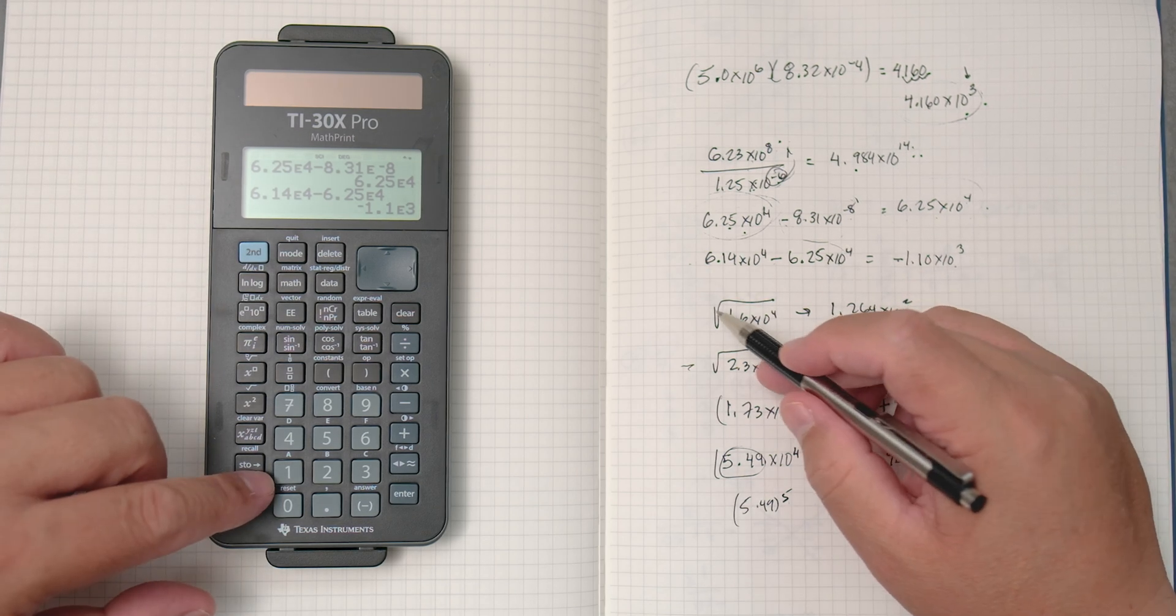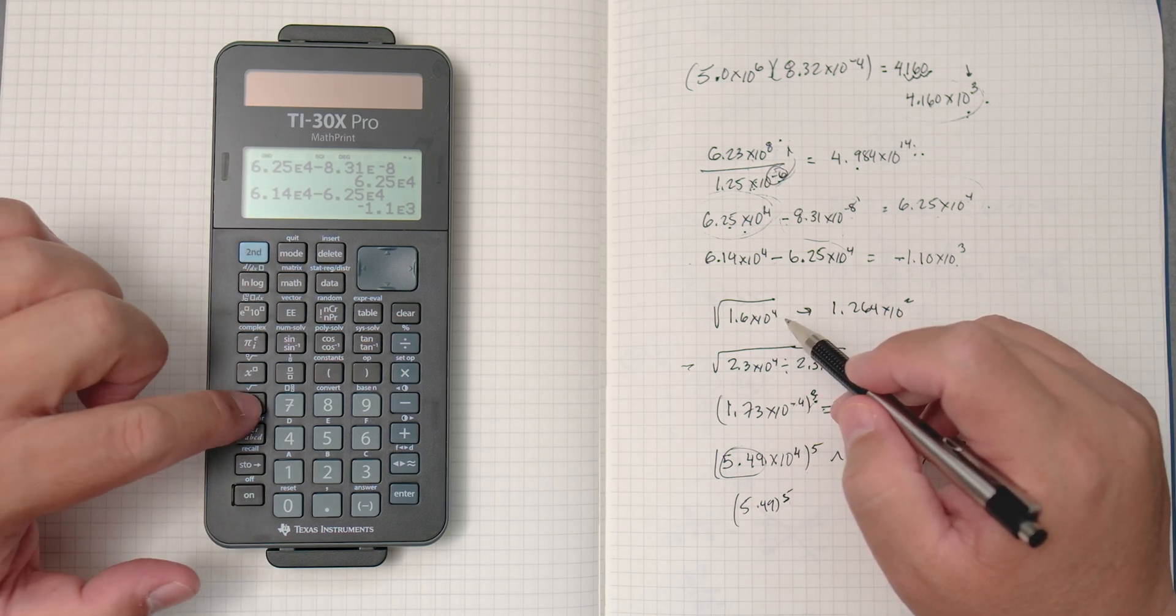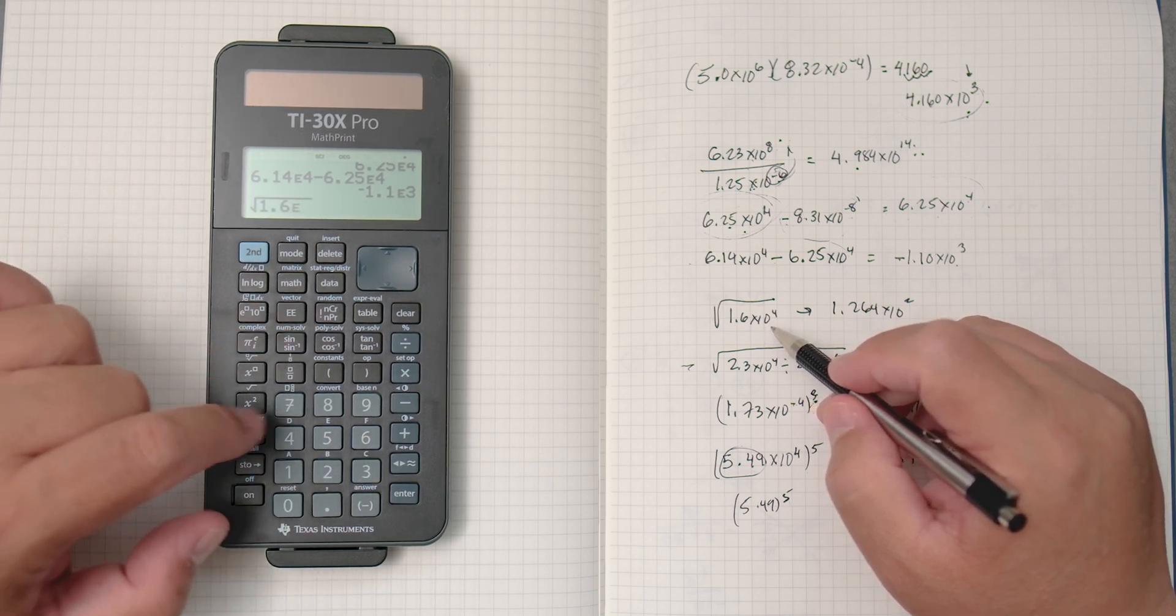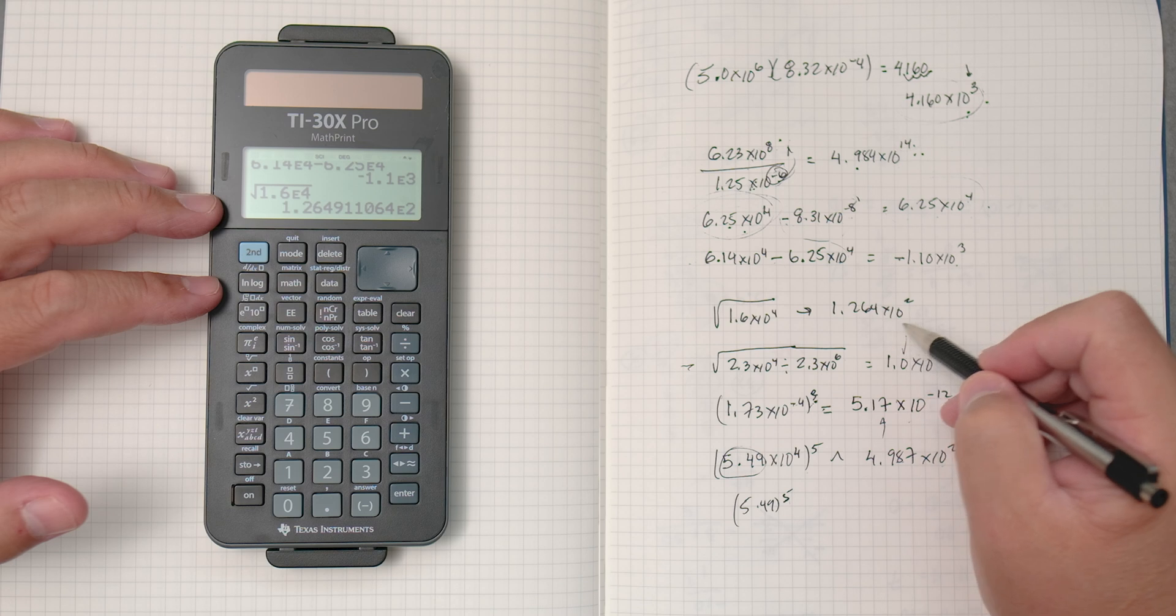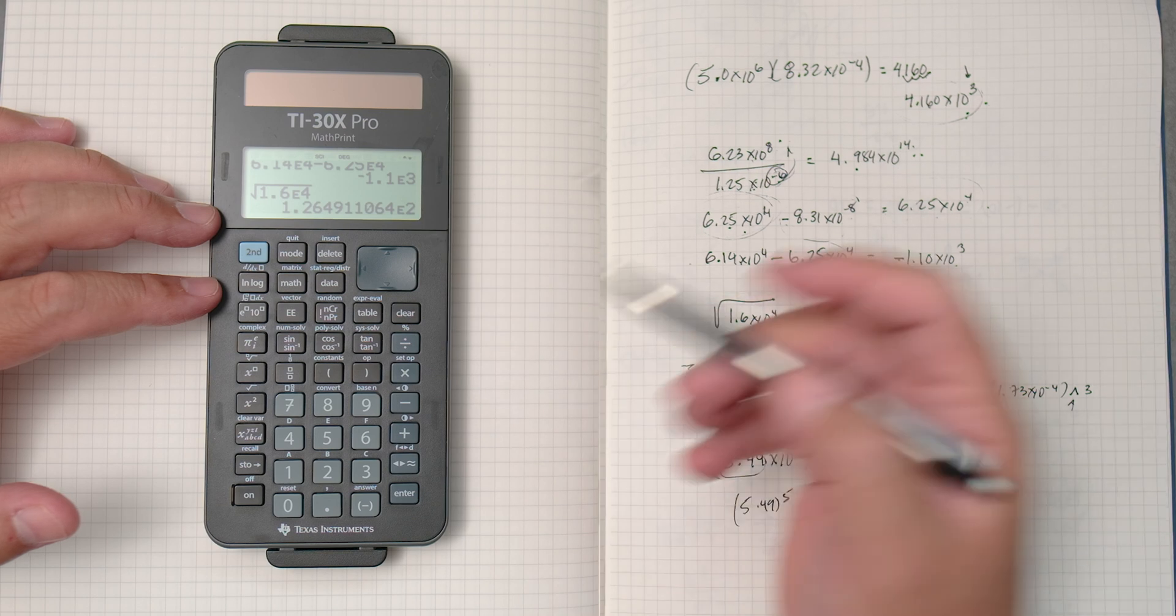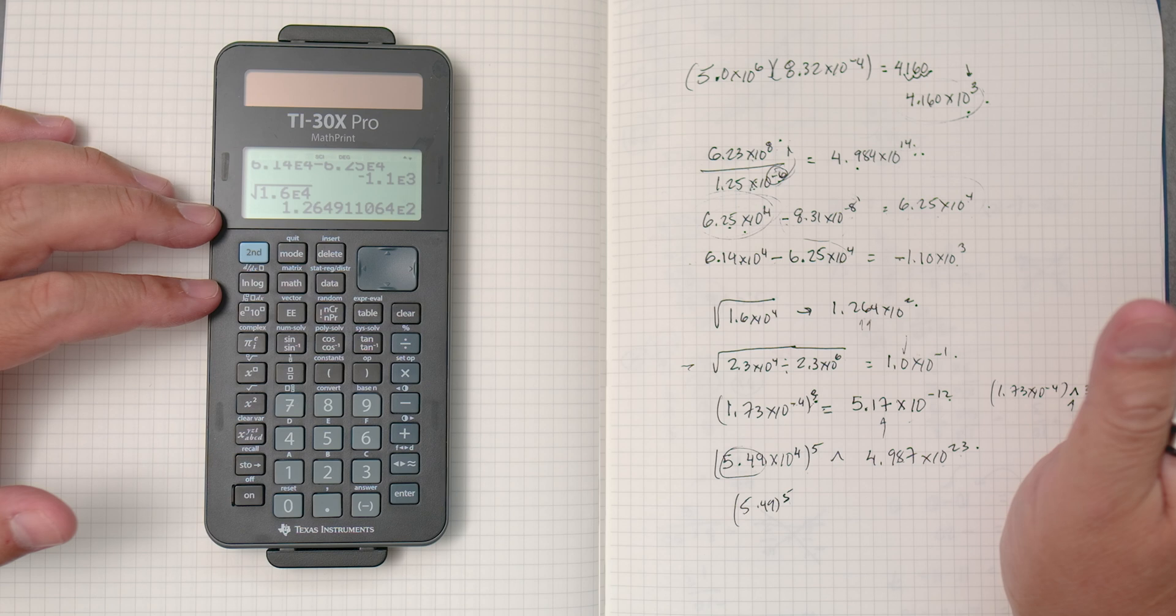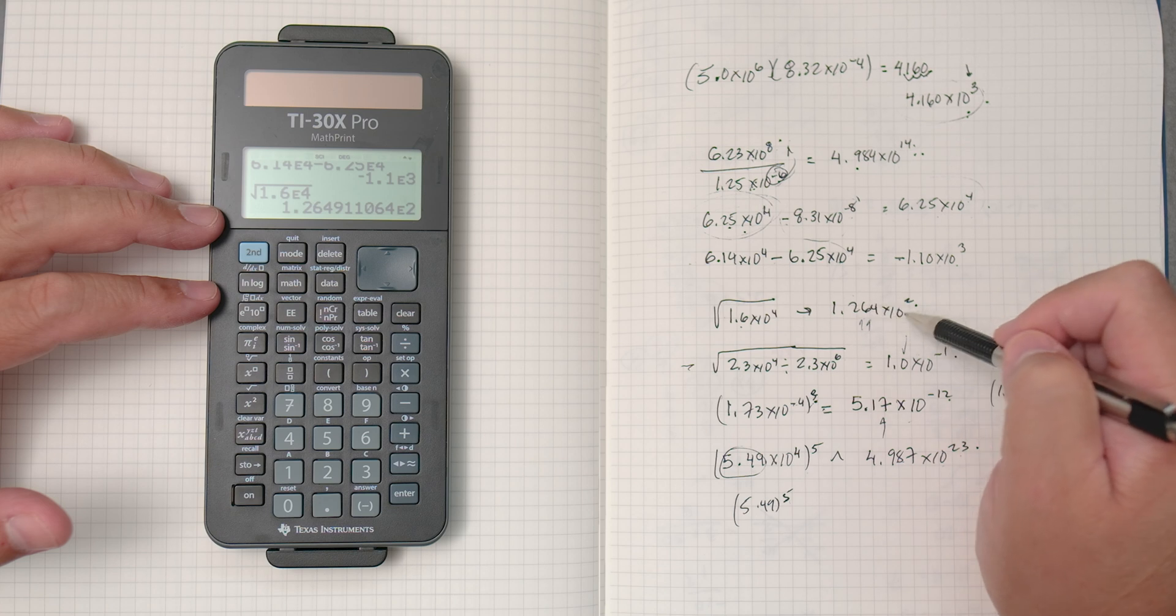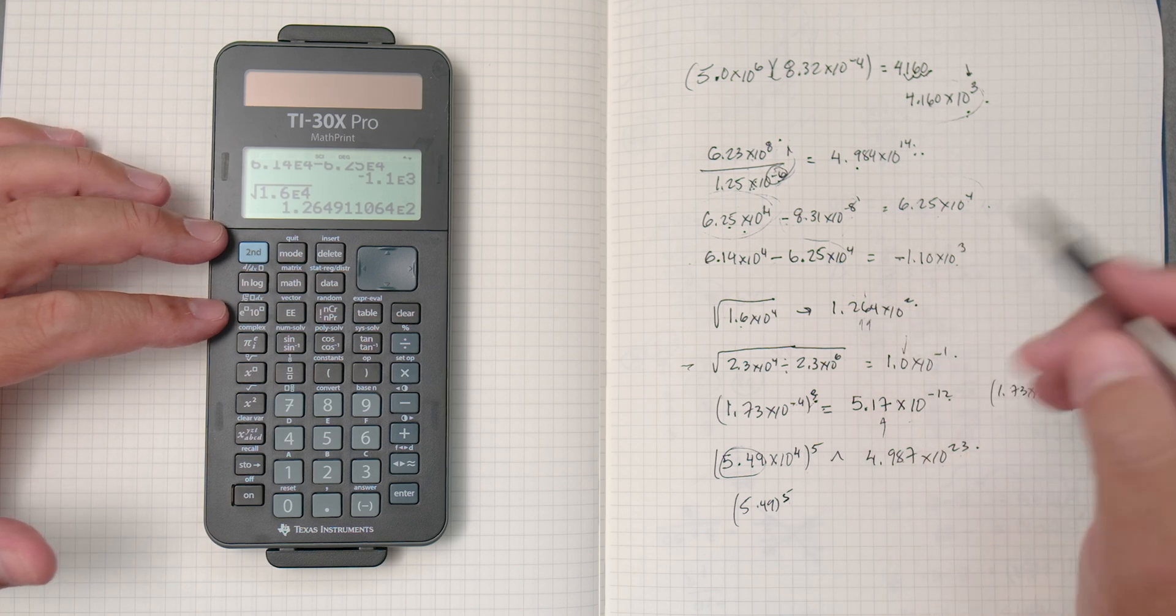Then this one, square root of 1.6 times 10 to the fourth. So, this one you go second and then square root, 1.6 times 10 to the fourth. E to the fourth. Enter. 1.26 times 10 to the second power, which is right here, second power. Again, scientific notation, how many numbers to write, that's going to be up to your teacher. In this case, probably two significant digits. You would probably only write 1.2 times 10 to the second, or 1.3 maybe if you round. But that's up to your teacher.